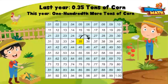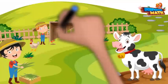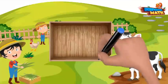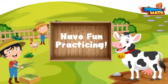One hundredth more than 0.35 is 0.36. Great work, Sammy! Well done, friends — you are ready to take this on your own. Remember your two strategies: change the hundredths place value by one up or down, or use a hundredths chart to help you. Happy practicing!